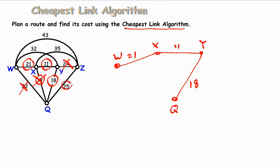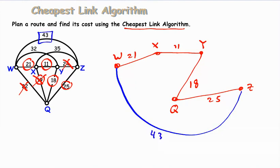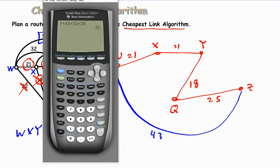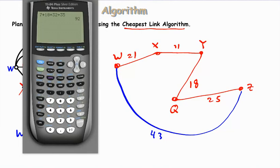Next, we have 25, which goes from Q to Z. And we say, well, that's okay. I don't have three edges out of a point. I'm not closing a circuit early. And now we've visited all the cities. Our two endpoints must be connected. So W must be connected to Z. When I look at the graph, W to Z is 43. So now we can just look at our graph and say W, X, Y, Q, Z, W is our solution. And we can add up the weights of these edges and we get 118.